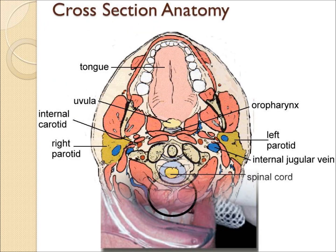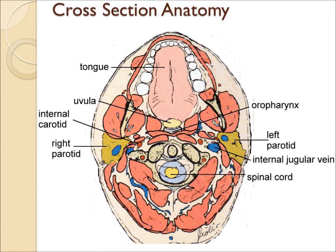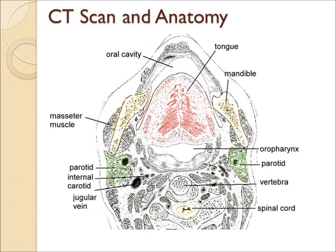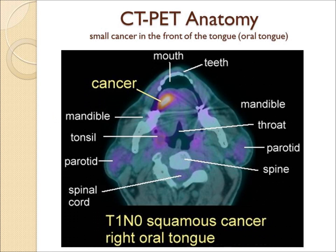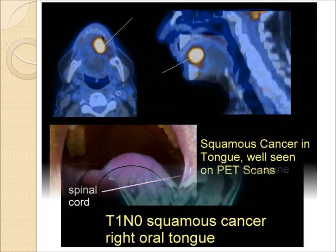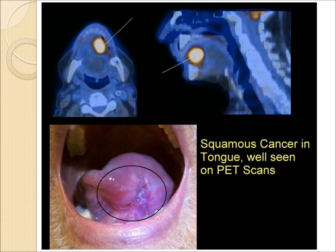In order to look at a PET-CT, it's important to understand the cross-section anatomy through the mouth or tongue as shown on these diagrams. A typical PET-CT is shown here with cancer of the tongue. A PET scan uses radioactive glucose, and the cancer will light up or change colors on a PET-CT. A patient with an obvious tumor in the front of his tongue is shown here, along with the corresponding PET-CT.